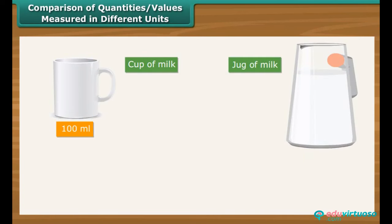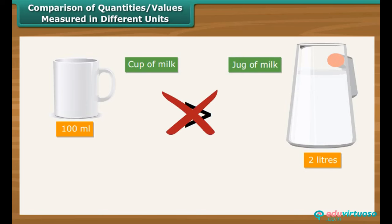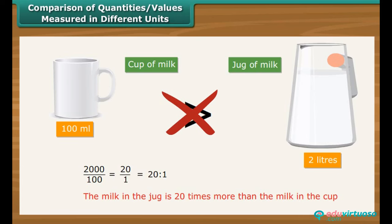Comparison of quantities measured in different units. Vinita has 100 ml of milk in a cup and 2 liters of milk in a jug. Can we say that the quantity of milk in the cup is greater than in the jug? No — the two quantities are measured in different units and cannot be compared. We should express them in the same units. Express 2 liters as 2000 ml. Now 2000 by 100 is 20 is to 1. Therefore, the milk in the jug is 20 times more than the milk in the cup.